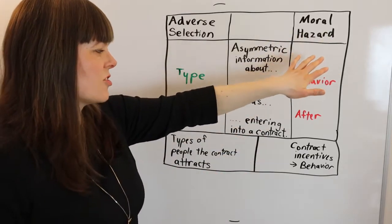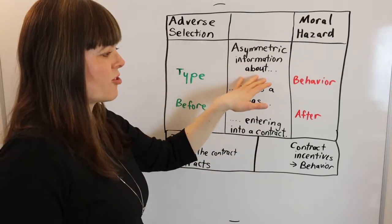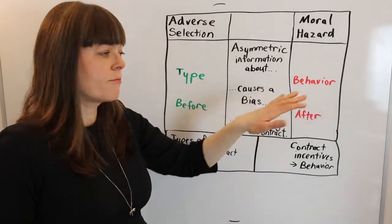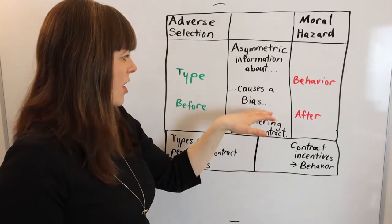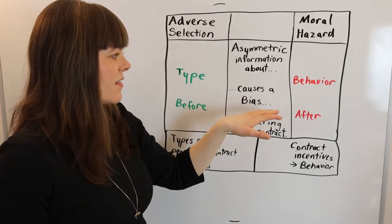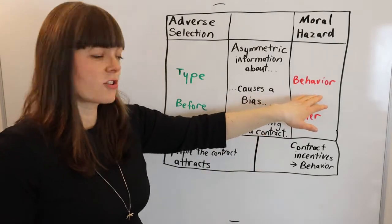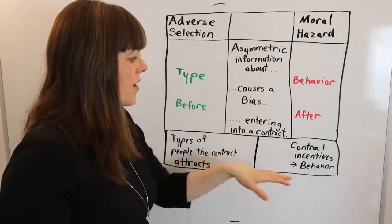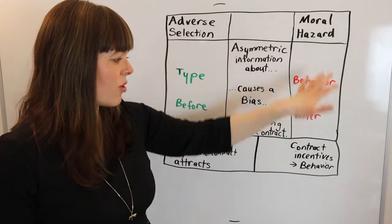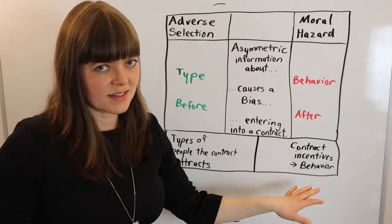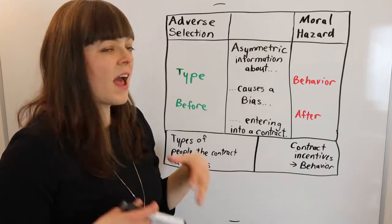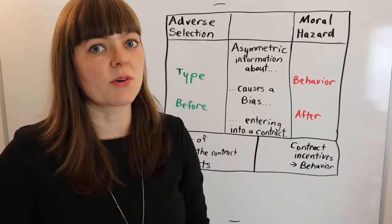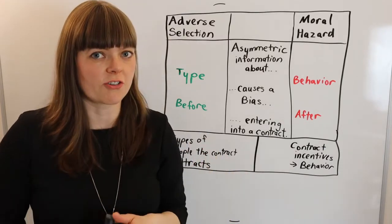On the other hand, moral hazard is asymmetric information about the behavior of people who are entering into a contract, and that behavior causes a bias after entering into the contract. So moral hazard is really about the incentives created by the contract, and the bias that happens because those incentives play out after people are under the contract.